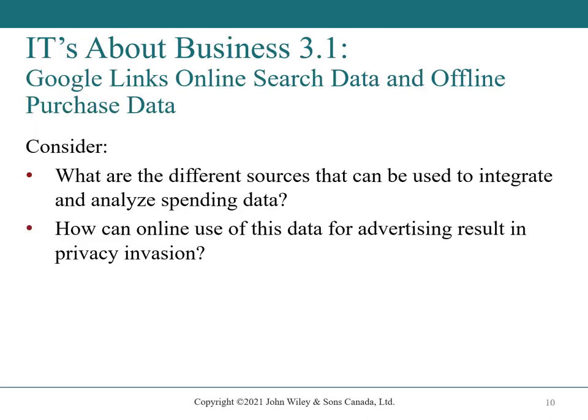It's About Business 3.1: Google links online search data and offline purchase data. Consider what different sources can be used to integrate and analyze spending data, and how online use of this data for advertising can result in a privacy invasion.